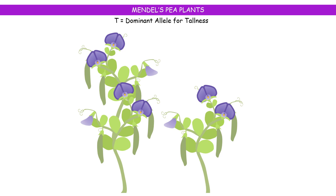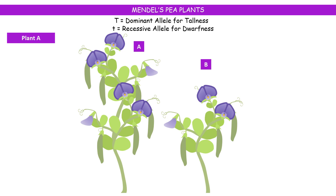In Mendelian pea plants, the height — the feature for tallness — is expressed by the dominant allele, which is represented by capital T, and the dwarfness by the recessive allele represented by small t. Now we have two plants. If we were to find out the genotypes of these plants, say plant A is the tall one and plant B is the short one.